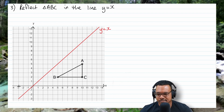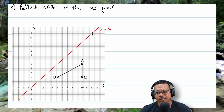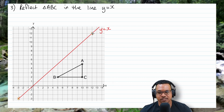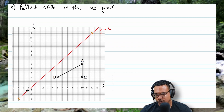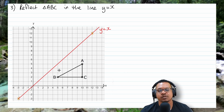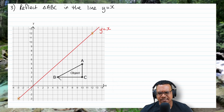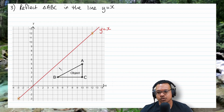Now things get a bit tricky because we must ensure the line connecting the object and image is at right angles to the mirror line y equals x. We can use the diagonal of the grid squares. For point B, drawing a guideline at 90 degrees to the mirror line — counting 1 and a half diagonal units — gives us B prime. For point A, counting 2 and a half diagonal units along the perpendicular gives us A prime.